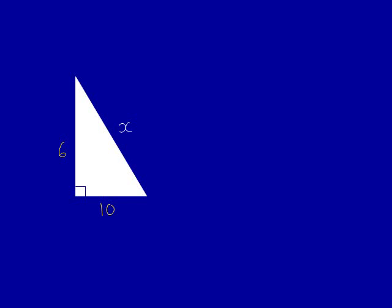So here's our question. We've been given a right angle triangle with two sides 6 and 10 and one side x. Obviously what we need to do is work out what x is.